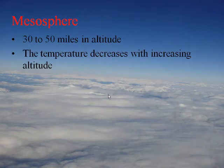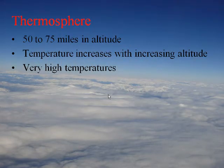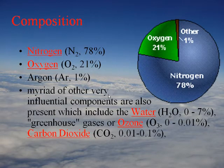The mesosphere extends up to about 50 miles; temperature is decreasing again. The thermosphere is the highest layer, up to 75 miles, with increasing temperature again — incredibly warm because there's almost no protection from solar radiation. That's the last layer before the exosphere, which is outer space.